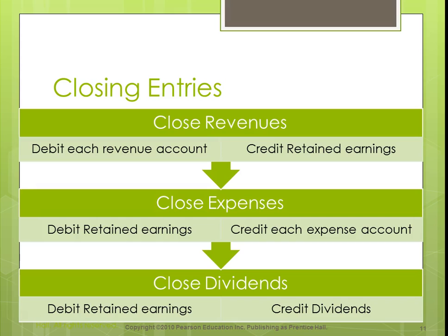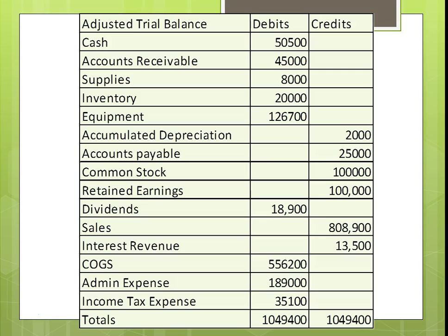The last thing we do — and this is only at the end of the year — is transfer the balances in our nominal accounts to retained earnings. We always start by zeroing out our revenue accounts. Since revenue normally has a credit balance, we debit it and credit retained earnings. Expenses normally have a debit balance, so we credit our expense accounts and debit retained earnings. Lastly, we zero out dividends, which have a debit balance — we credit dividends and debit retained earnings, because expenses and dividends reduce retained earnings. Our permanent accounts, which are balance sheet accounts, would not be zeroed out.